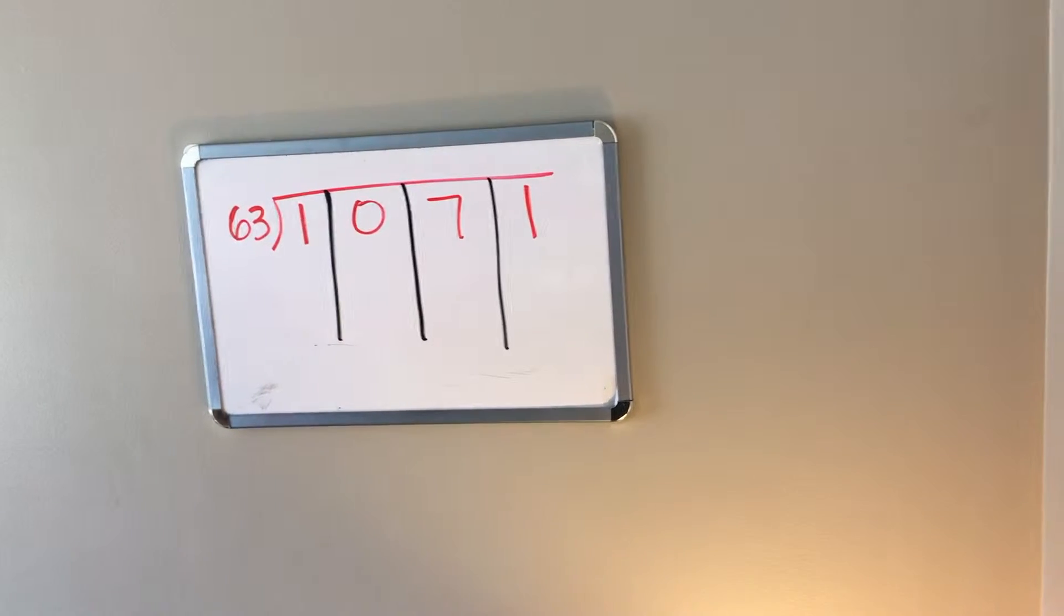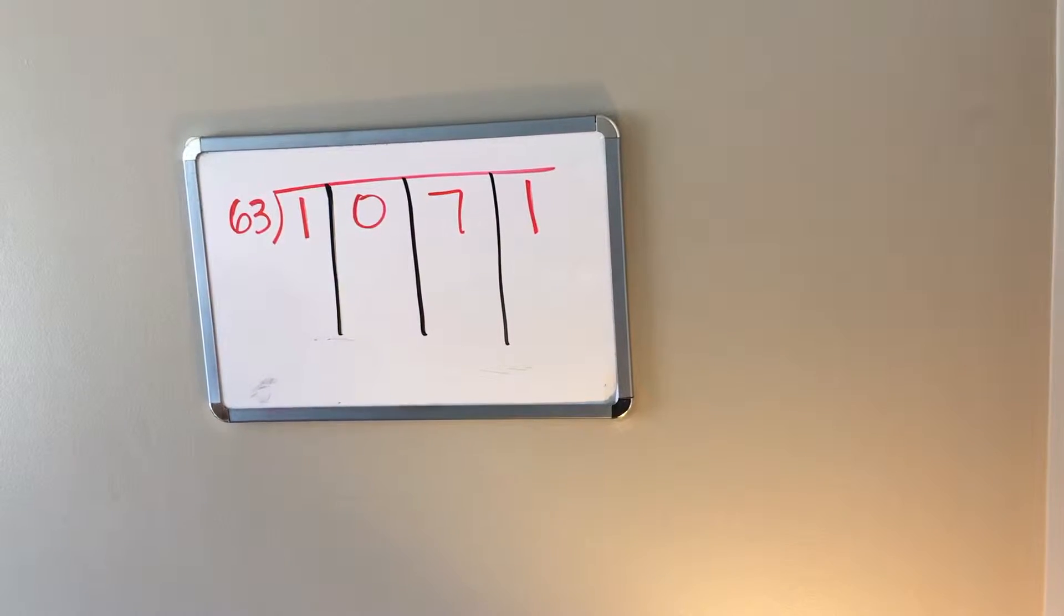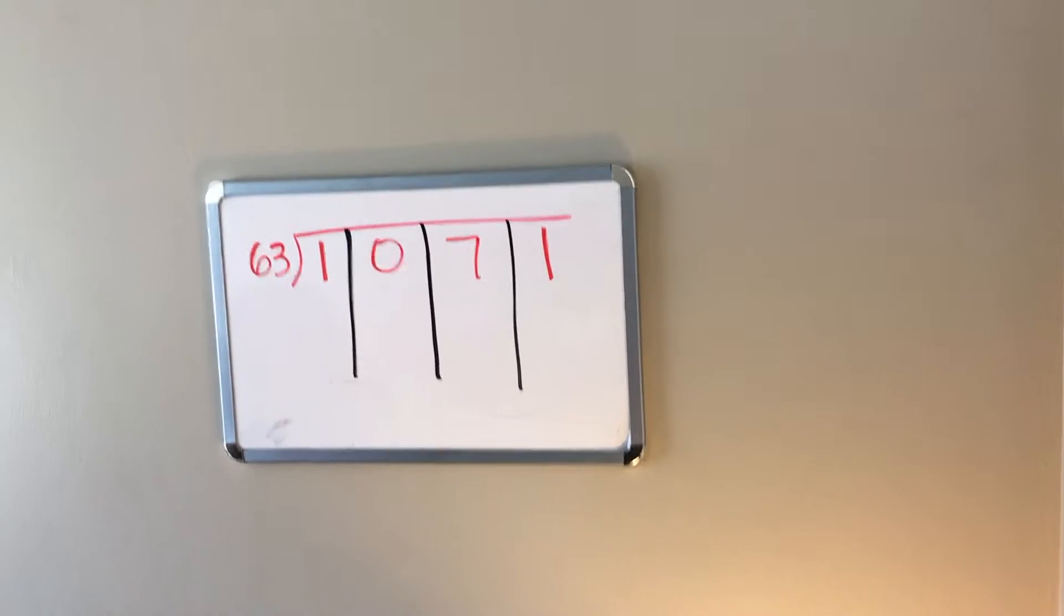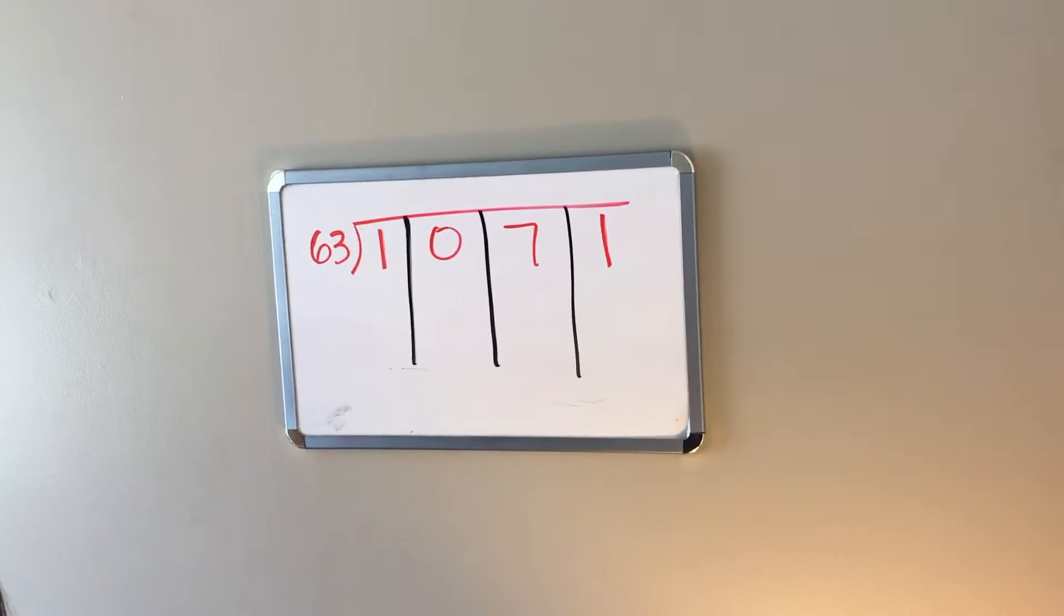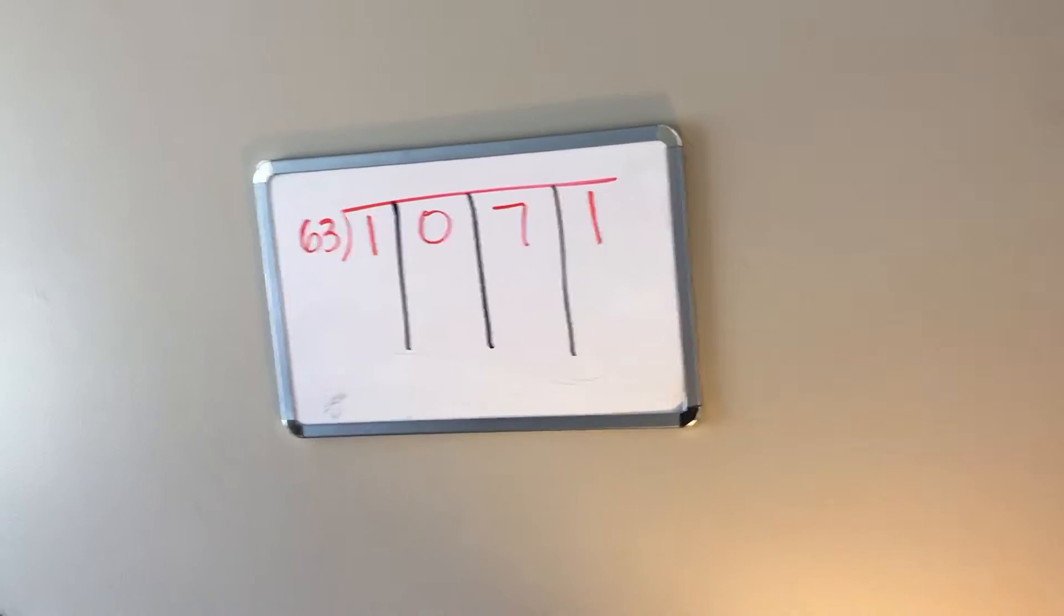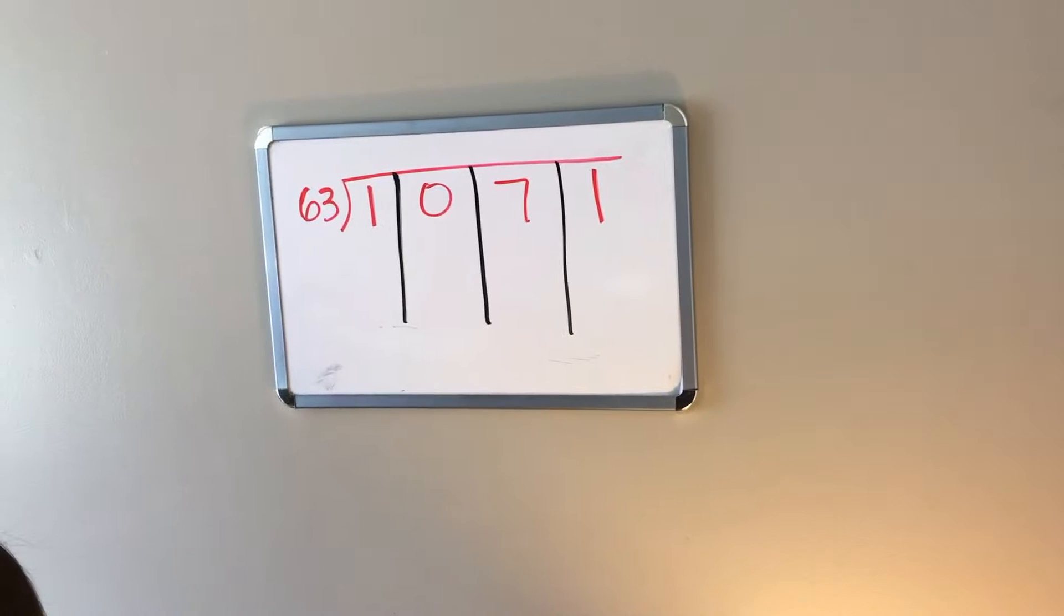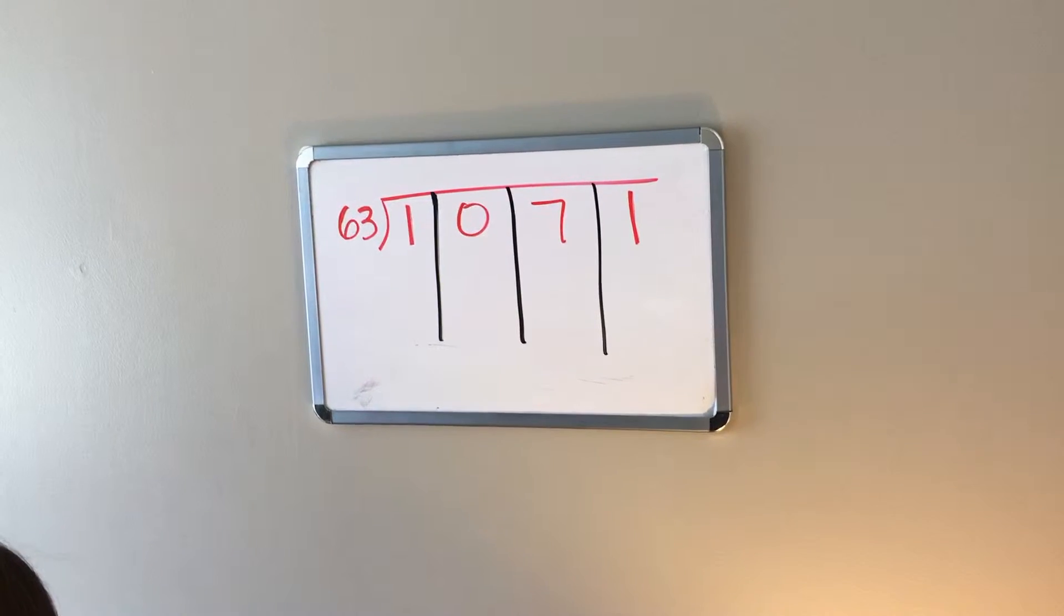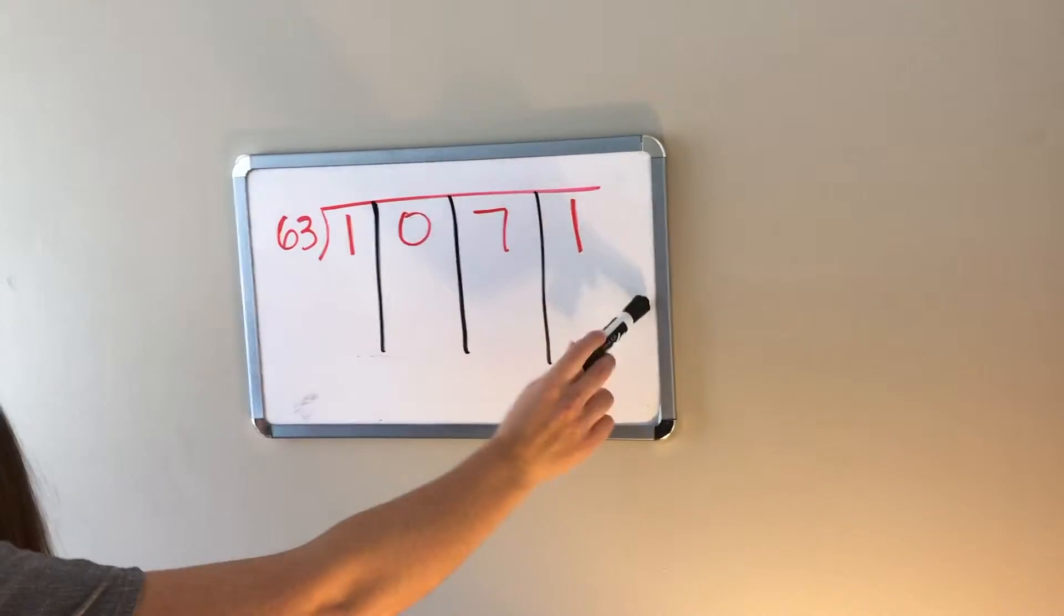Column division means let's explicitly show place value and then understand what they mean, so we're going to do fair sharing. I'm going to take this amount of stuff, 1071, and I'm going to give it equally to 63 people. Imagine some sort of picture in your head - we have 63 people, you're going to give all of your stuff to them.